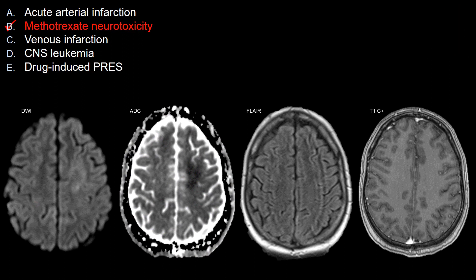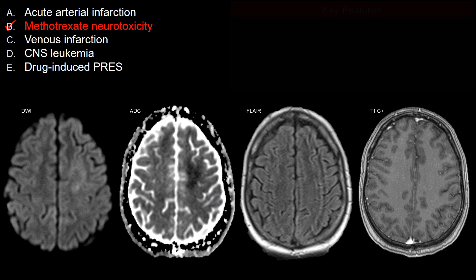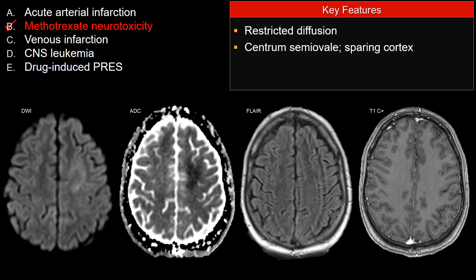The best choice here is mesotrexate neurotoxicity. Let's look at some of the features that make this the best answer. Hopefully you notice on DWI and ADC there's a relatively faint signal on DWI — it's bright — and clearly there's reduced diffusivity, dark on ADC.